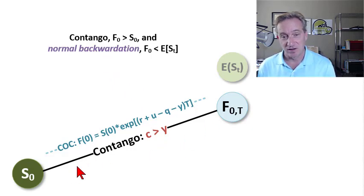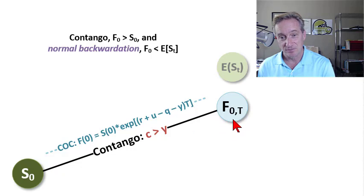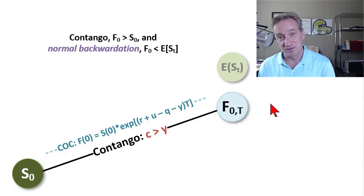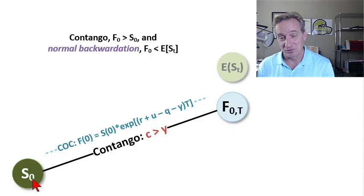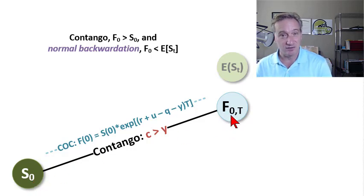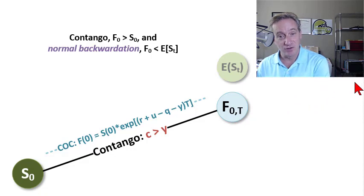Contango is just a fancy term for an upward sloping futures curve. This is a feature of a curve that we observe today — we observe a spot price, we know what the spot price is, and then we would observe a set of traded futures prices. For example, if this is July, then there might be an August futures price, and in contango, it's greater than the spot price. But we would also have a series of futures prices that go out further into the future.